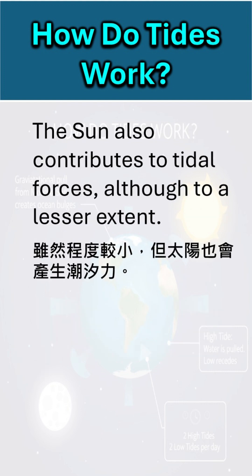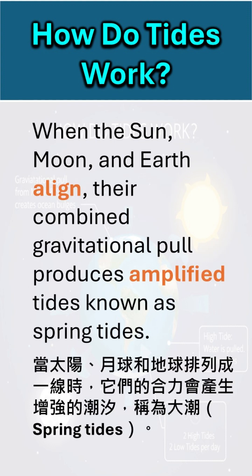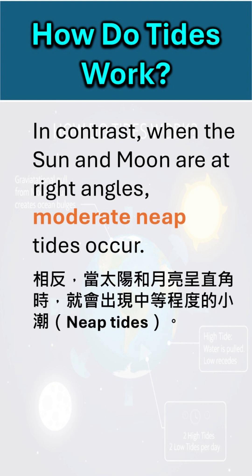The Sun also contributes to tidal forces, although to a lesser extent. When the Sun, Moon, and Earth align, their combined gravitational pull produces amplified tides known as spring tides. In contrast, when the Sun and Moon are at right angles, moderate neap tides occur.